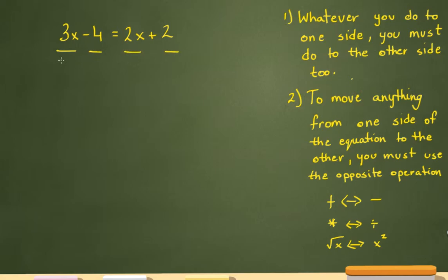In order to bring this 2x to the left side, I need to subtract 2x from here, and that means I have to subtract 2x from here as well. The reason I subtracted it, because over here this is a positive 2x, and the opposite operation would be minus 2x. Since I'm subtracting 2x over here, I have to subtract 2x over here as well.